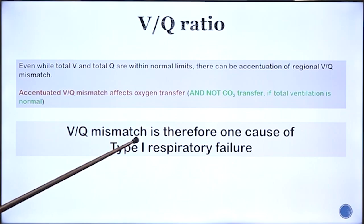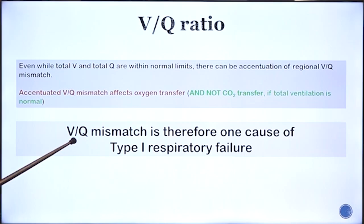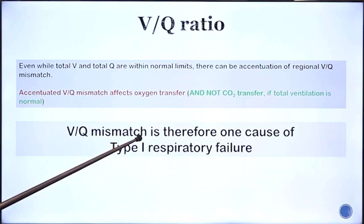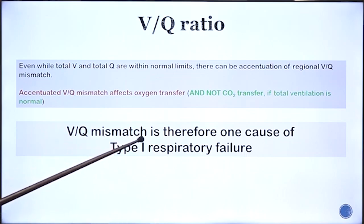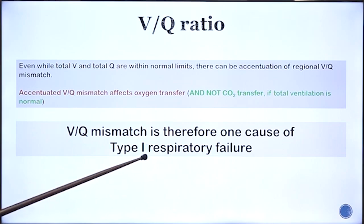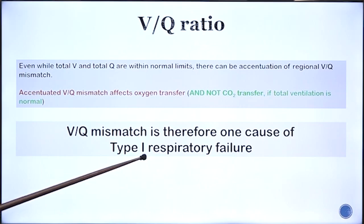Diffusion impairment can occur with reduction in surface area of the diffusion membrane, increase in thickness of the membrane, or accentuated VQ mismatch — we are equating VQ mismatch to loss of surface area. In VQ mismatch, classified as diffusion impairment, there is type 1 respiratory failure where arterial oxygen partial pressure is lower and arterial PCO2 is normal.